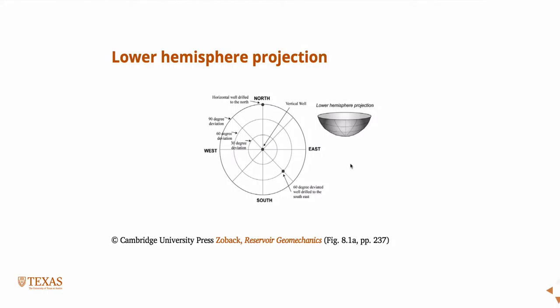So if you imagine this lower hemisphere, wherever a wellbore, if we were to drill a wellbore from the center down through it, from the center down into any orientation, the place where it crossed this lower hemisphere, we would plot in this space. So these contour lines represent different angles. So in the center, if the plot was in the center, this would be a vertical well. If it were all the way to the outside, it would be a horizontal well. This is a contour line of 30 degrees, 60 degrees, 90 degrees.